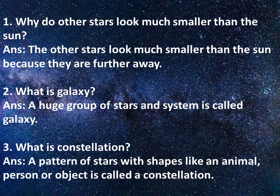Number two: What is a galaxy? Answer: A huge group of stars and solar systems is called a galaxy. Number three: What is a constellation? Answer: A pattern of stars with shapes like an animal, person, or object is called a constellation.